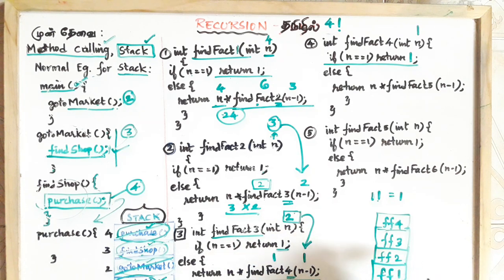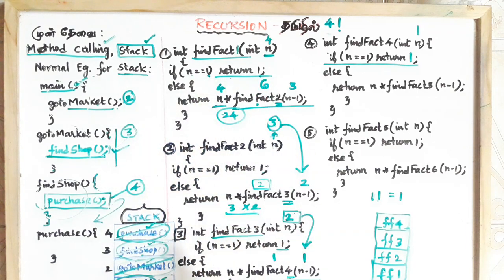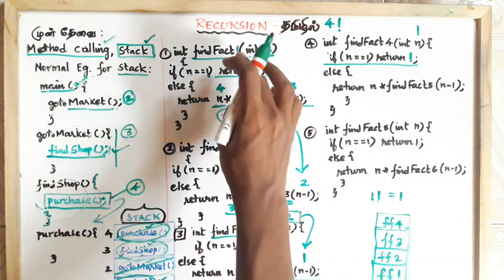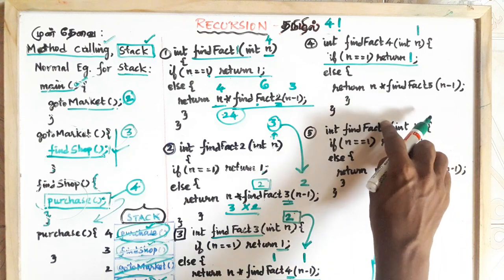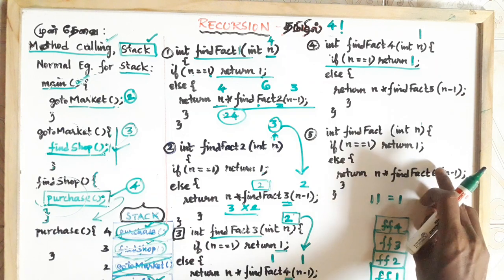This is the stack order flow. How can we do this recursion? We do this with a method. Let's run: if the value is 1, we will return 1. Else, return n into findFactorial of n-1. That is the next recursive call. That is the method of fine factorial.